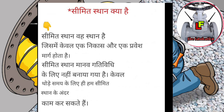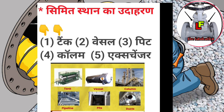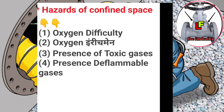Examples of confined space: 1. Tank, 2. Vessel, 3. Column, 4. Pit, 5. Exchanger.